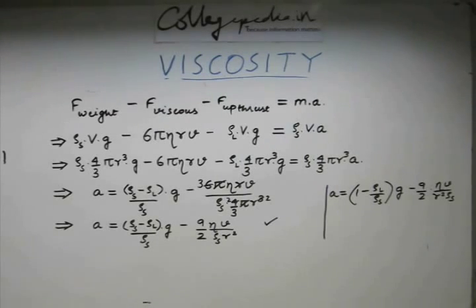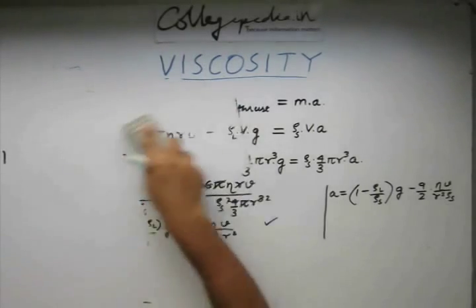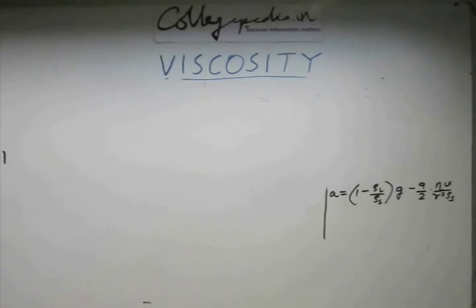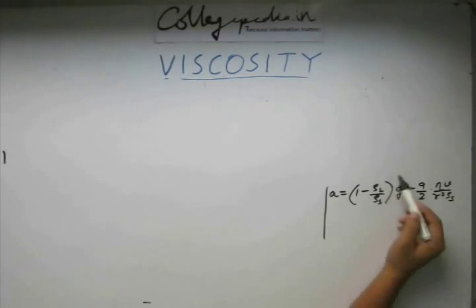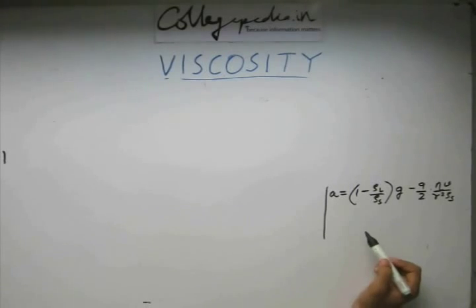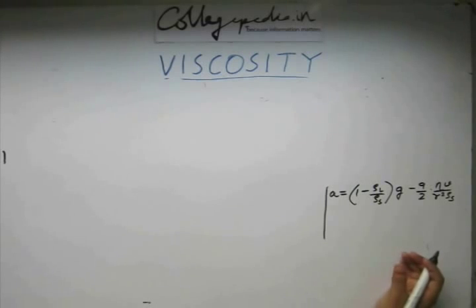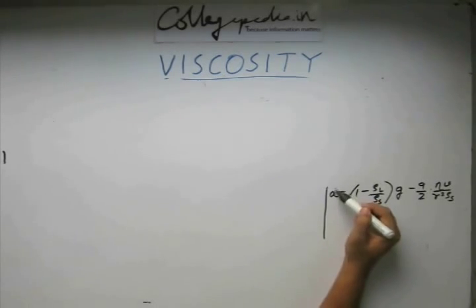The next part of the question says we are supposed to find its velocity after a long time. After a long time, if you look at this expression, what we see is this acceleration is supported by a negative term. This negative term is going to decrease its acceleration to a point where this acceleration is going to get to zero, which means this term and this term are going to be equal. At that point, what is really going to happen is the body will experience a net force of zero. At a net force of zero, we are going to end up with a velocity which is constant after that time. So what we are supposed to do here is equate this acceleration to zero.